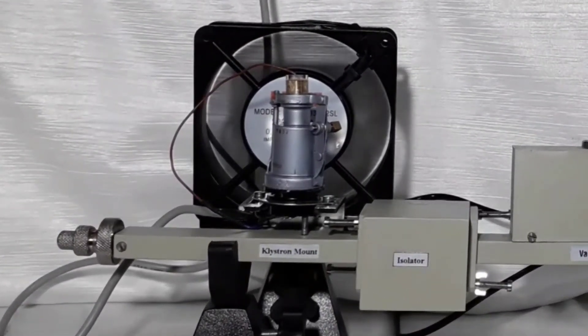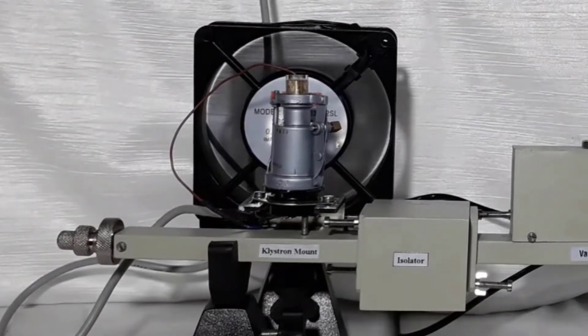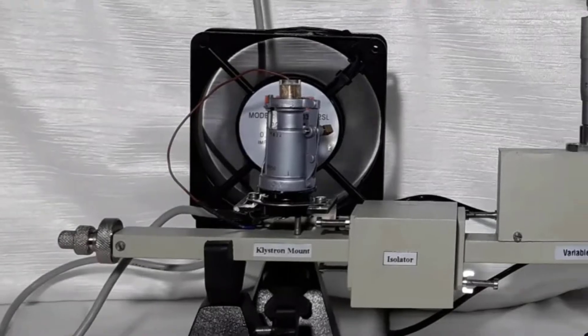The klystron tube is mounted on a component named as klystron mount. A fan is placed in front of the klystron tube for cooling purpose.